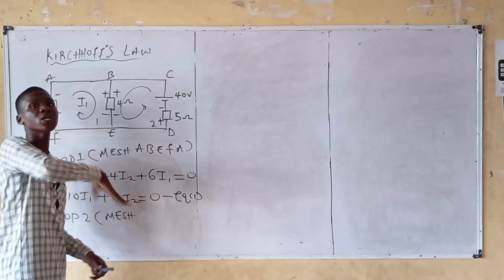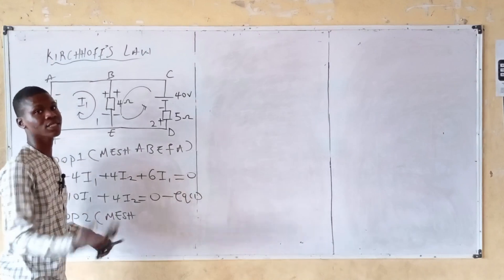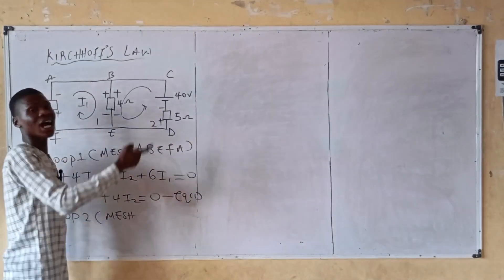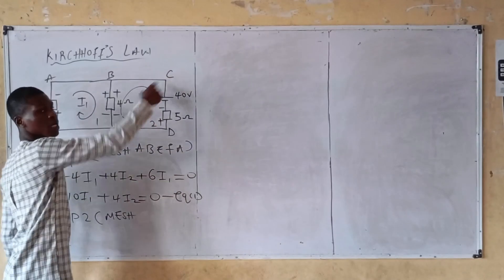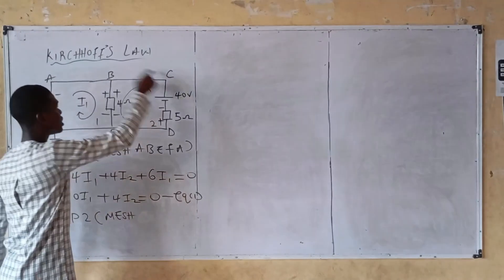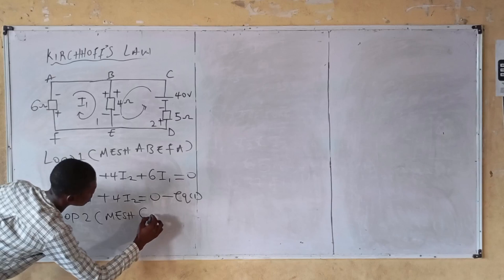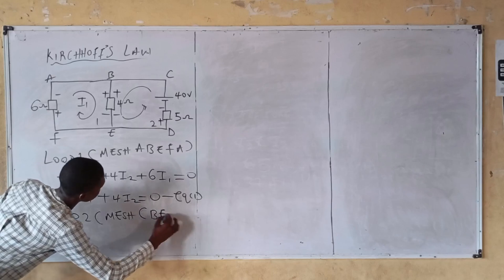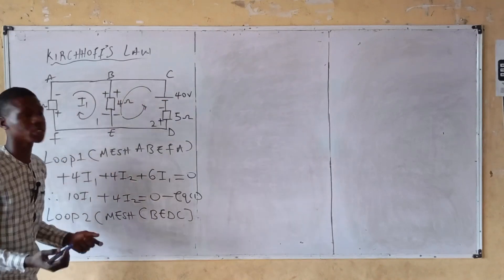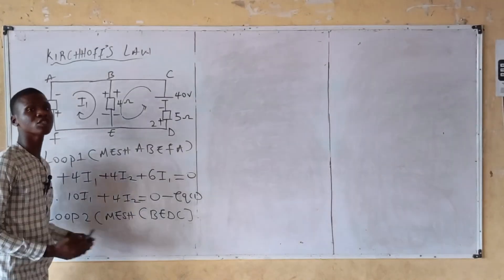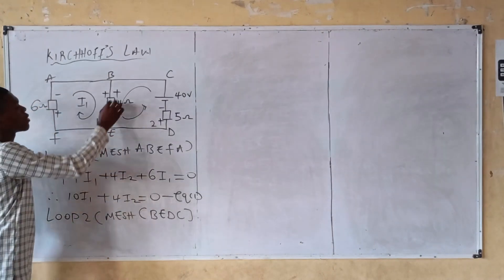Step three: loop two, mesh CBEDC. We assigned an anticlockwise direction, so we start from C back to C. The mesh path is C→B→E→D→C. From C to B: no resistor. B to E: four ohm resistor shared between loop one and loop two.